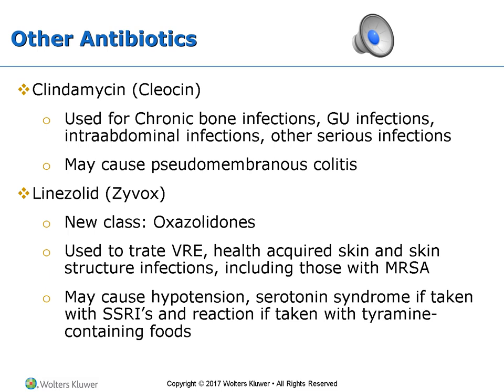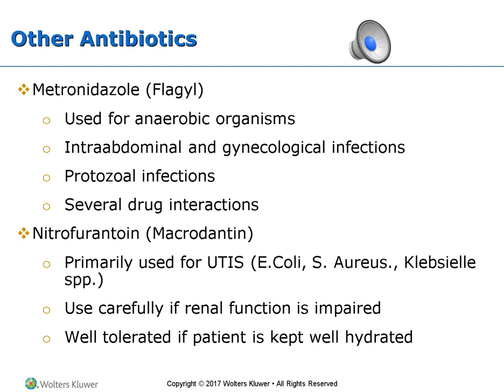Zyvox (linezolid) is a newer class used to treat VRE. It can cause hypotension and serotonin syndrome when taken with SSRIs, and foods containing tyramine such as turkey should be avoided. Flagyl is used on gastrointestinal and gynecological patients and treats anaerobic organisms; it contains several drug interactions. Macrodantin is primarily used for urinary tract infections — watch renal function, as the drug concentrates in the urine. These are usually well-tolerated in patients who stay well-hydrated, so hydrate, hydrate, hydrate.